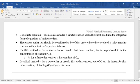Use of rate equation: the data collected in a kinetic reaction should be substituted into the integrated form of equations of various orders. The process under test should be considered to be of that order where the calculated K value remains constant within limits of experimental error. Half-life method: for a zero order or pseudo first order reaction, half-life is proportional to initial concentration of reactant. Graphical method: for a zero order or pseudo first order reaction, plot of concentration versus time is linear. For first order reaction, plot of log initial concentration minus concentration at time T versus time is linear.